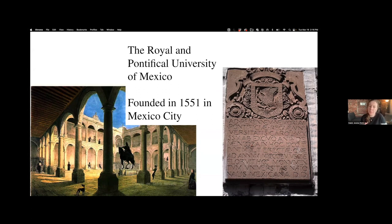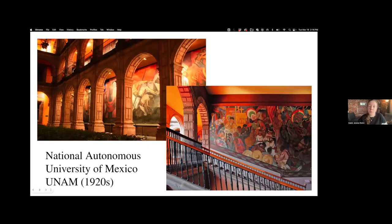This university occupied several buildings in Mexico's historical center and continued to occupy those buildings for the better part of 400 years — you can still visit a lot of those buildings today. I start with this question as a way to think about the different global models of higher education as we think about university campuses. By the 20th century, this institution had been renamed the National Autonomous University of Mexico, a secular public university run by the Mexican state.